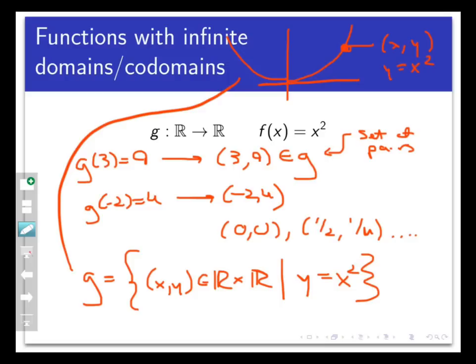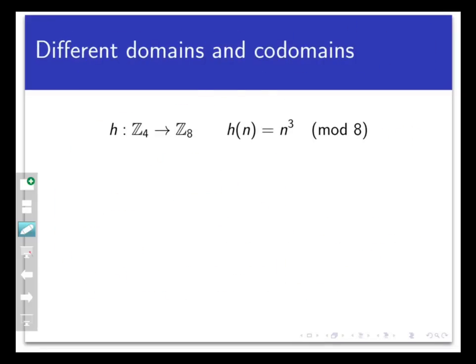So one more example before we reach our main definition here. So far our examples have had the domain and codomain the same, but that doesn't have to be the case. For example, take the function h that maps Z4 into Z8, that's given by h of n equals n cubed mod 8. Here the domain and codomain are both finite because I just want to keep the example simple, but notice that they're different sets.